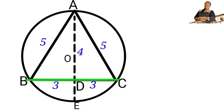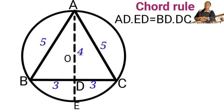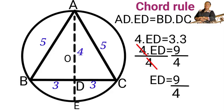So using the above theorem, AD times ED equals BD times DC. So AD is four, ED is unknown, equals BD is three times DC is three. When we calculate, this equals nine over four. So ED will be equal to nine over four.